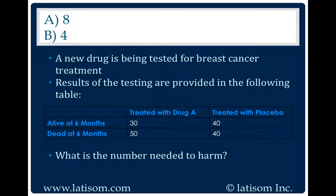0.625 minus 0.5, giving an attributable risk of 0.125. Therefore, the number needed to harm is one divided by 0.125, which equals eight.